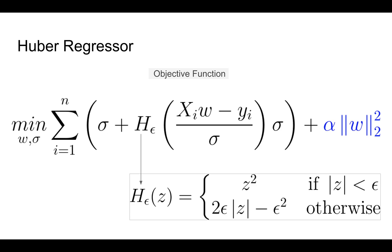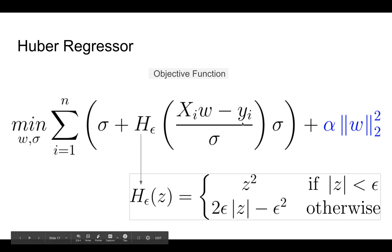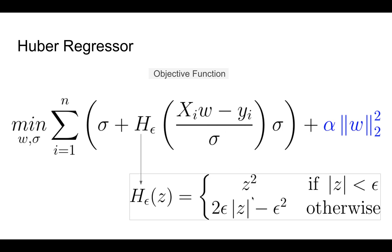The last algorithm is the Huber regressor. The objective function is given by an equation where we are trying to find optimal values for not only w but also sigma, and it includes a regularization term. The variable z represents the value within the expression (x·w − y_i) divided by sigma, which is used to calculate the values of w and sigma and perform the fit on the data set. This is also a robust regressor, so it's not susceptible to outliers.